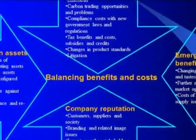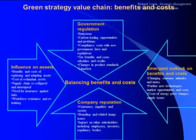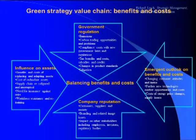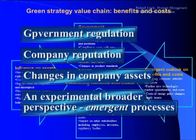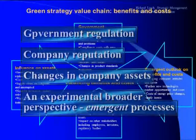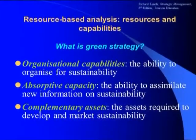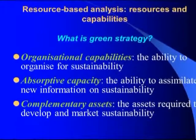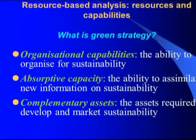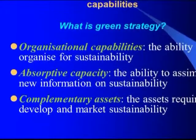The overall principle will be the need to balance the benefits of green strategy against the costs of undertaking such policies. There are four principal areas: government regulation, company reputation, changes in company assets, and an experimental broader perspective that focuses on emergent strategy processes. More specifically, resource-based analysis will need to focus on three areas of the organisational capabilities of the company — the ability to assimilate and implement sustainability policies through its resources, and the resource assets needed to develop sustainability.